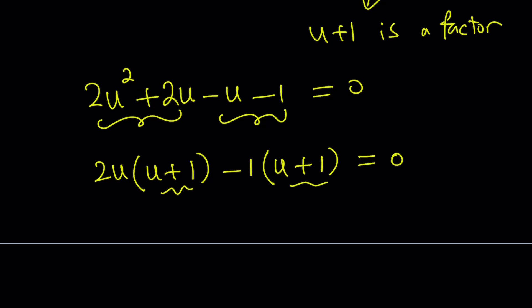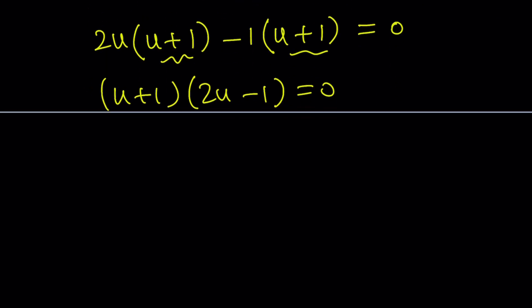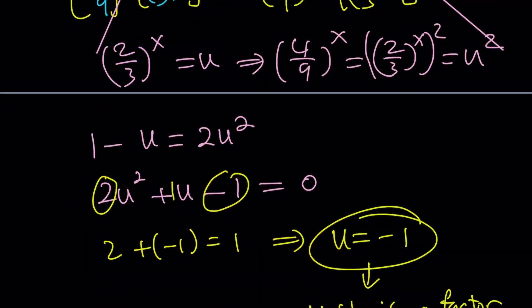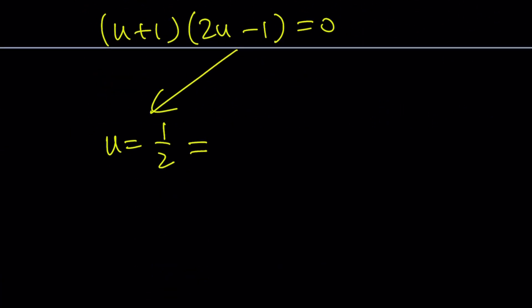From here we get (u + 1)(2u - 1), and we're going to take a look at each solution. This gives us u = 1/2, but u is what? We just specified: (2/3)^x. So this is (2/3)^x, that's u.